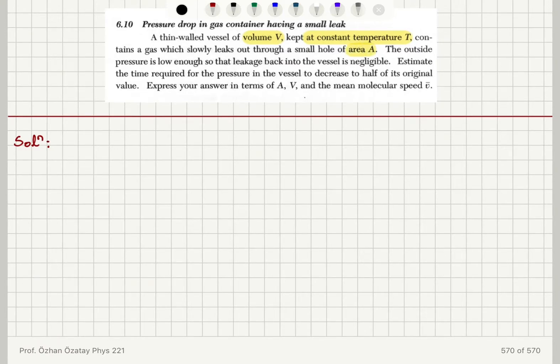The outside pressure is low enough so that the leakage back into the vessel is negligible. Estimate the time required for the pressure in the vessel to decrease to half of its original value. Express your answer in terms of A, V, and the mean molecular speed V-bar.